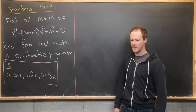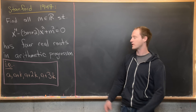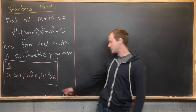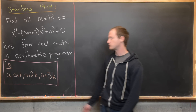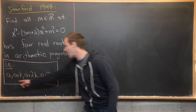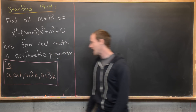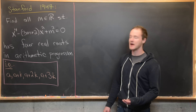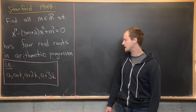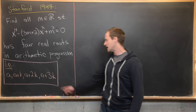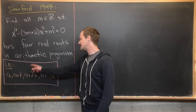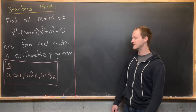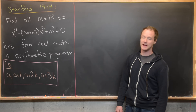Recall that four values are in arithmetic progression if they can be written from smallest to largest as a, a + k, a + 2k, a + 3k, where k is the common difference.